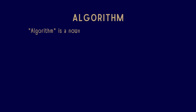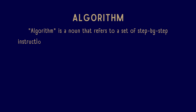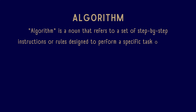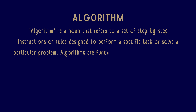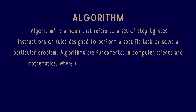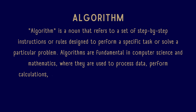Algorithm is a noun that refers to a set of step-by-step instructions or rules designed to perform a specific task or solve a particular problem. Algorithms are fundamental in computer science and mathematics, where they are used to process data, perform calculations, or automate decision-making processes.